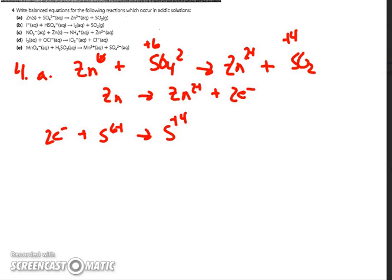On number 4, you're asked to put the whole thing together — balanced equations for reactions in acidic solutions. You really have to follow the process. I figured out that zinc goes from oxidation number 0 to plus 2, whereas sulfur is going from plus 6 to plus 4. I've got my half reactions and each involves two electrons, so I can go to the add step.